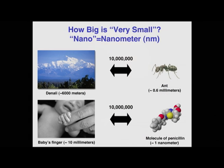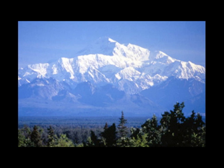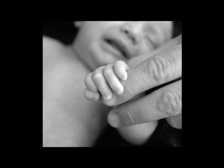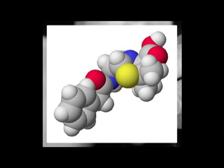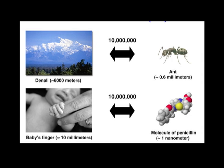These are the sorts of analogies I find useful. If you think about my favorite mountain, which is Denali — because it sits on a plane that's quite low, you see the entire mountain. The ratio of that to that is 10 million, and the ratio of a baby's finger to a molecule is about 10 million. So it's small.